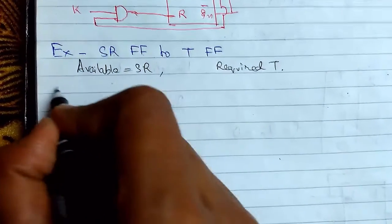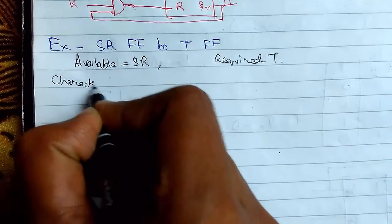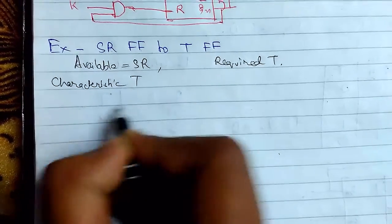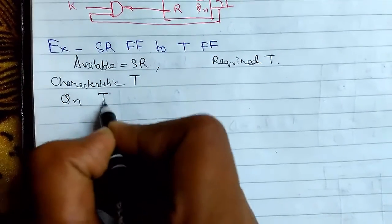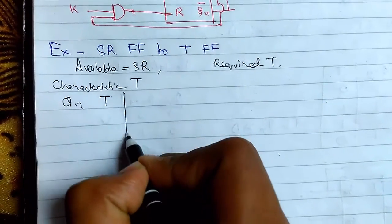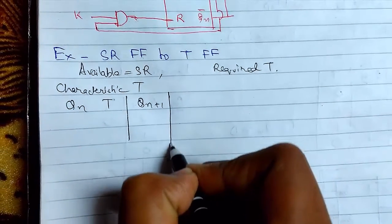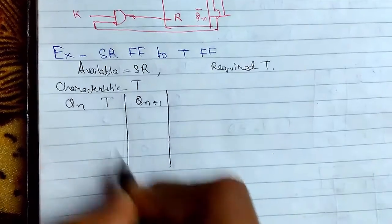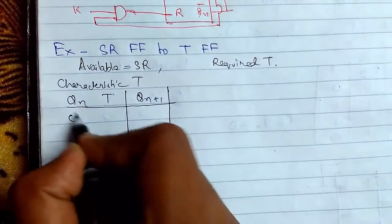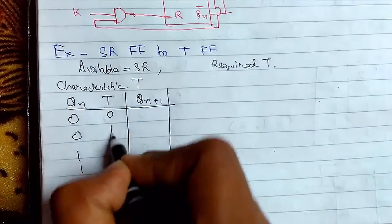We need to make the characteristic table of T flip-flop. Characteristic of T, this will be Q and T. You must remember the value for it so that you can use it without making the truth table.